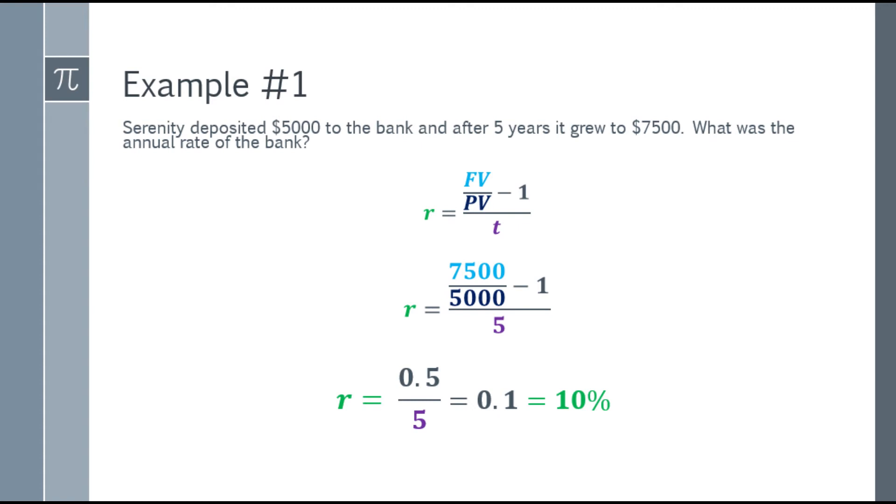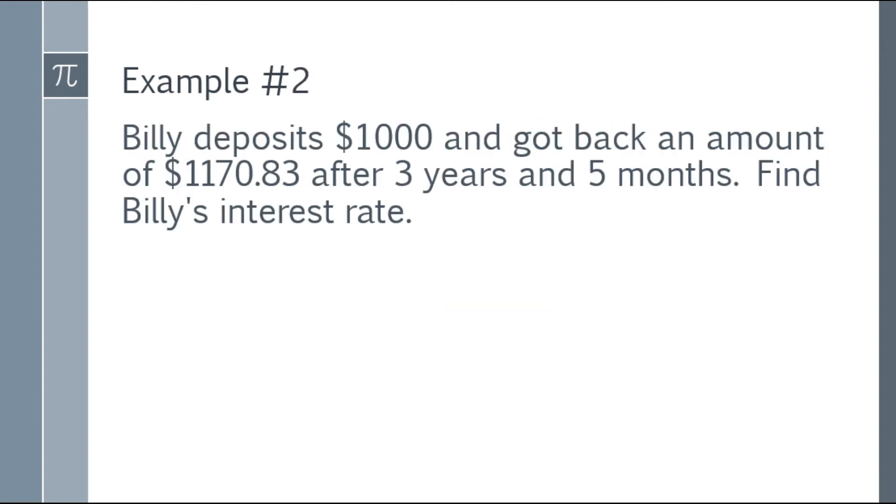Going back to the problem, Serenity deposited $5,000 to the bank, and after 5 years it grew to $7,500. The annual rate of that bank is 10%.